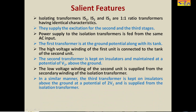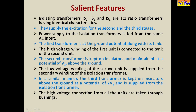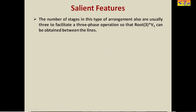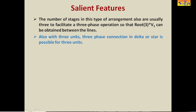Similarly, the third transformer is kept on insulators above ground at a potential of 2V2 and is supplied from the isolation transformer. The high voltage connections from all the units are taken through bushings. The number of stages is usually three to facilitate three-phase operation so that root-3 times V2 can be obtained between the lines as line voltage. With three units, a three-phase connection in delta or star is possible.